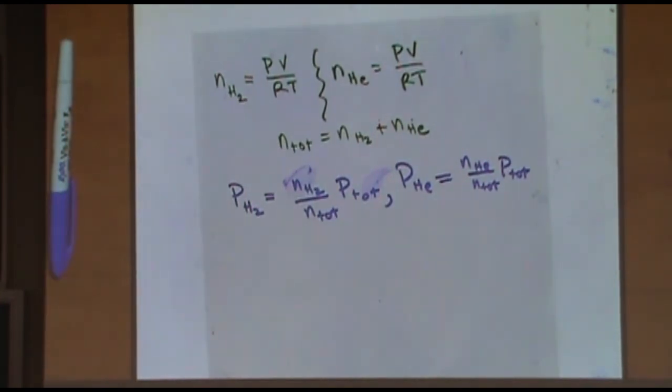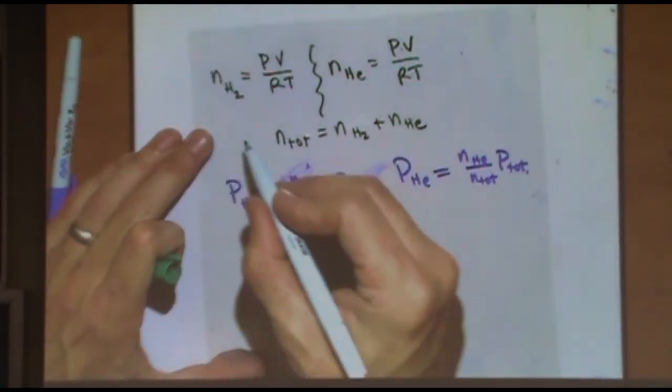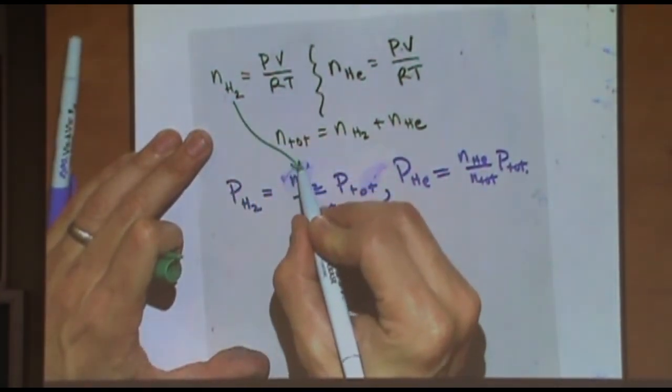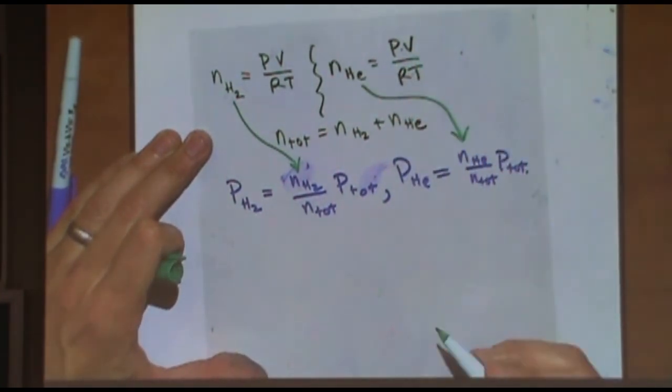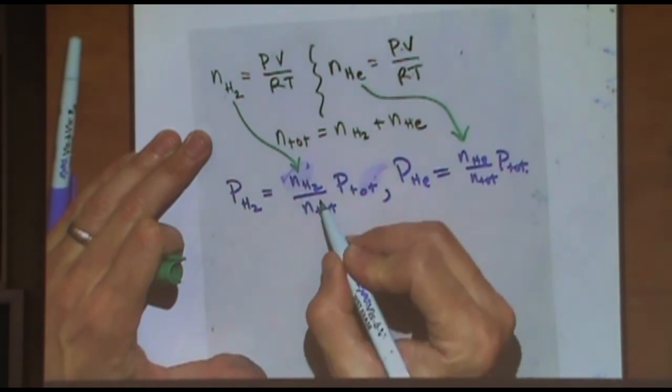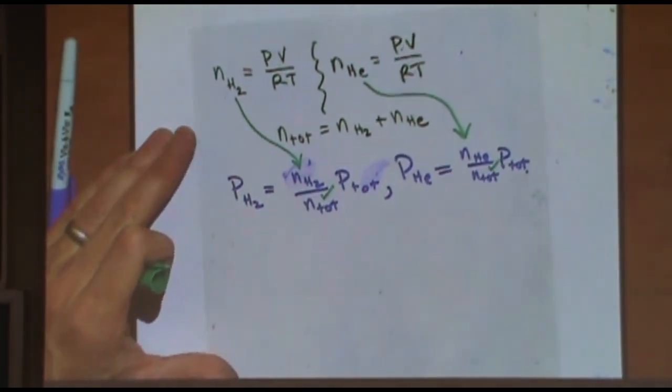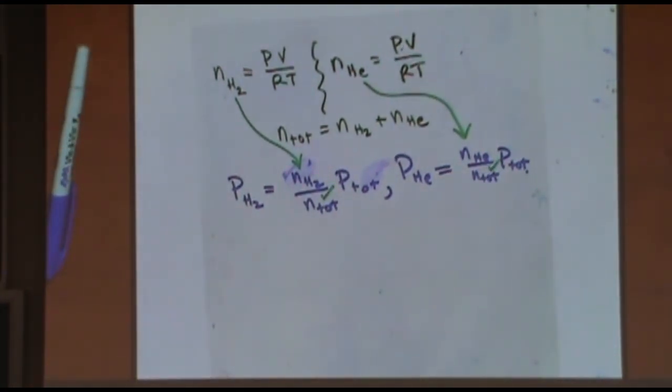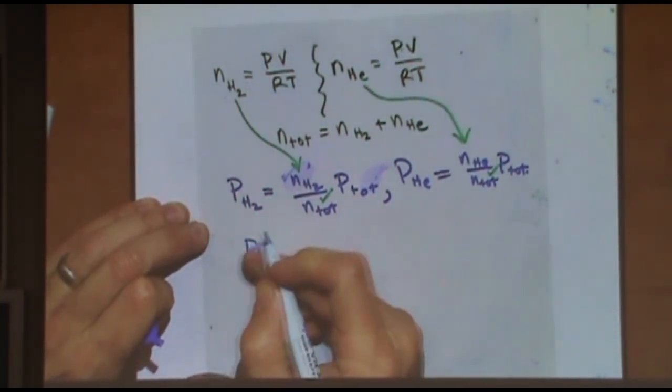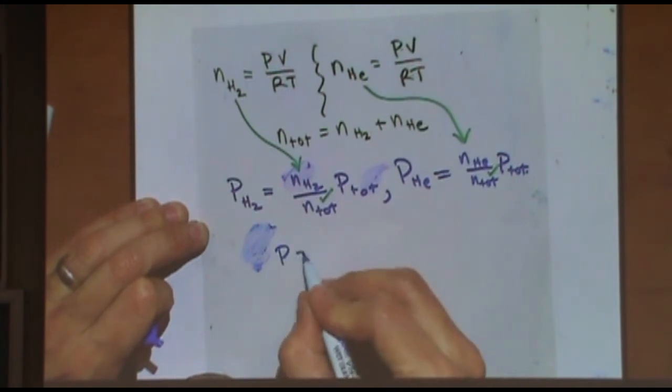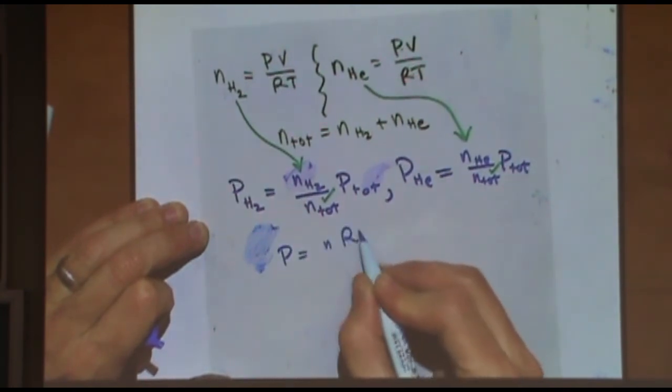So, you're almost there. Notice that we have the moles of hydrogen. We have the moles of helium and we have the total moles checked and checked. We've got all those numbers. The only thing we don't have is P total. If you need P total, which you would, what you're going to do is say, okay, P is the ideal gas law. Here's where I do this a little bit different than some other instructors.